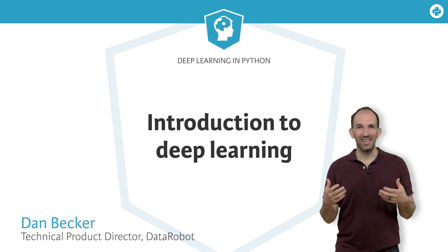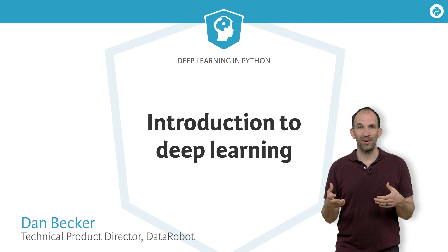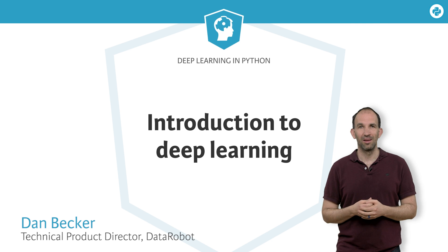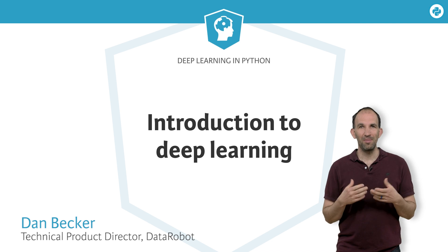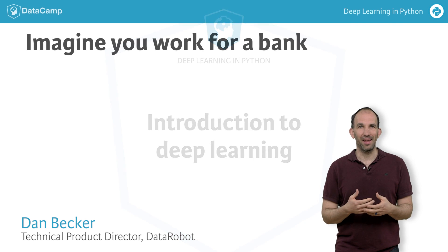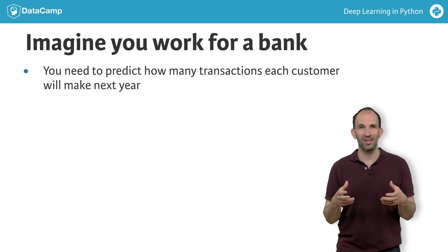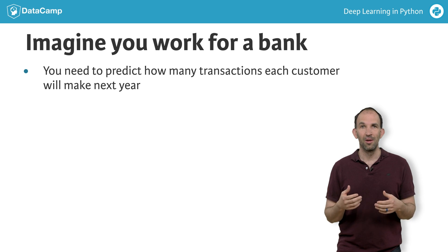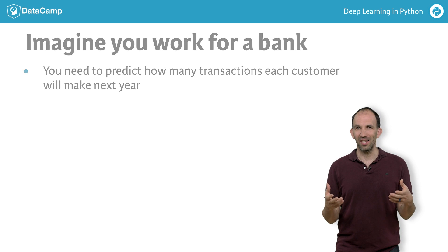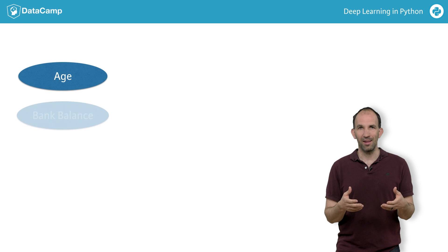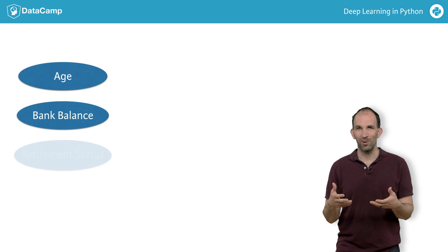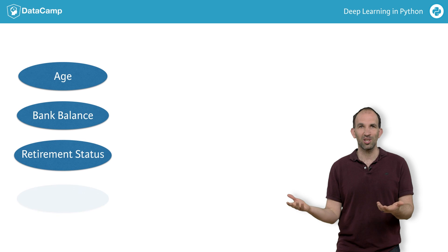I'm Dan Becker, a data scientist and contributor to the Keras and TensorFlow deep learning libraries. Imagine you work for a bank and you need to build a model predicting how many transactions each customer will make next year. You have predictive data or features like each customer's age, bank balance, whether they are retired, and so on.